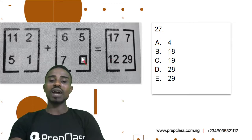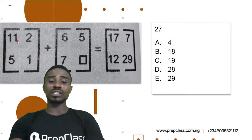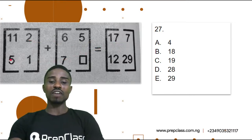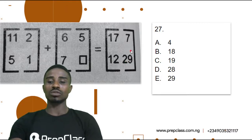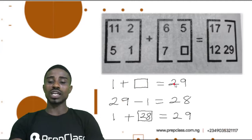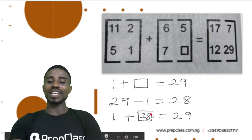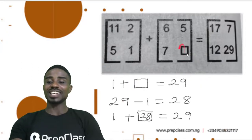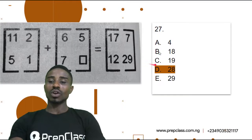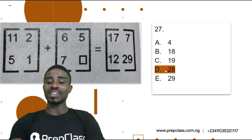Question 27. We have an empty box to fill. Going by the understanding we've gained from the sample: 11 plus 6 equals 17, 2 plus 5 equals 7, 5 plus 7 equals 12. So 1 plus what would give us 29? To get this done, 29 minus 1 gives us the answer — 29 minus 1 is equal to 28. If we verify: 1 plus 28 equals 29. So our correct answer here is 28. Question 27, option D — 28 is our correct answer.